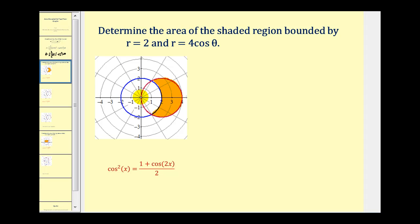So we'll have to integrate from here to here, where the integrand will be four cosine theta squared minus two squared. Or if we wanted to, we could just integrate from here to here and then double the area. And I think that's what we'll do.